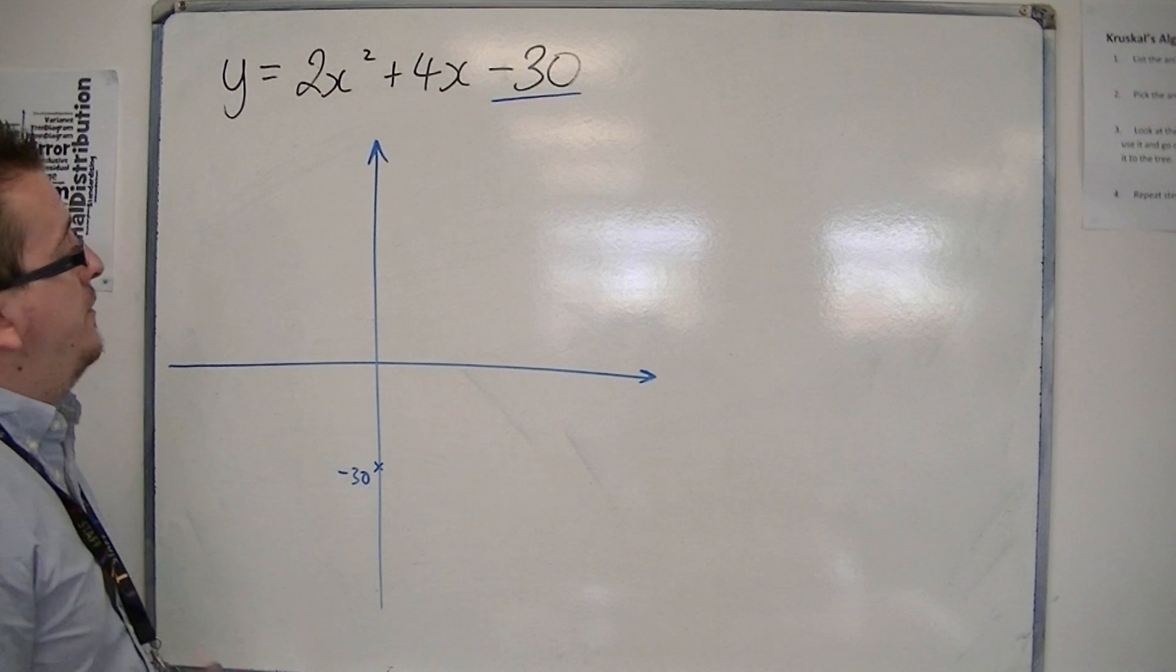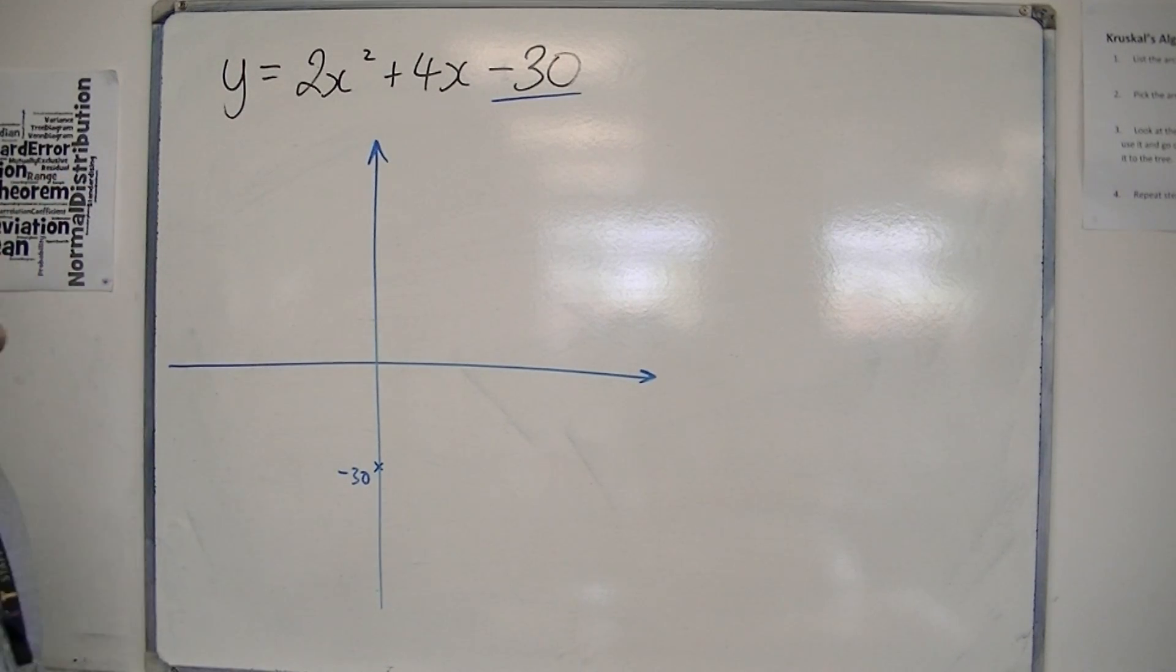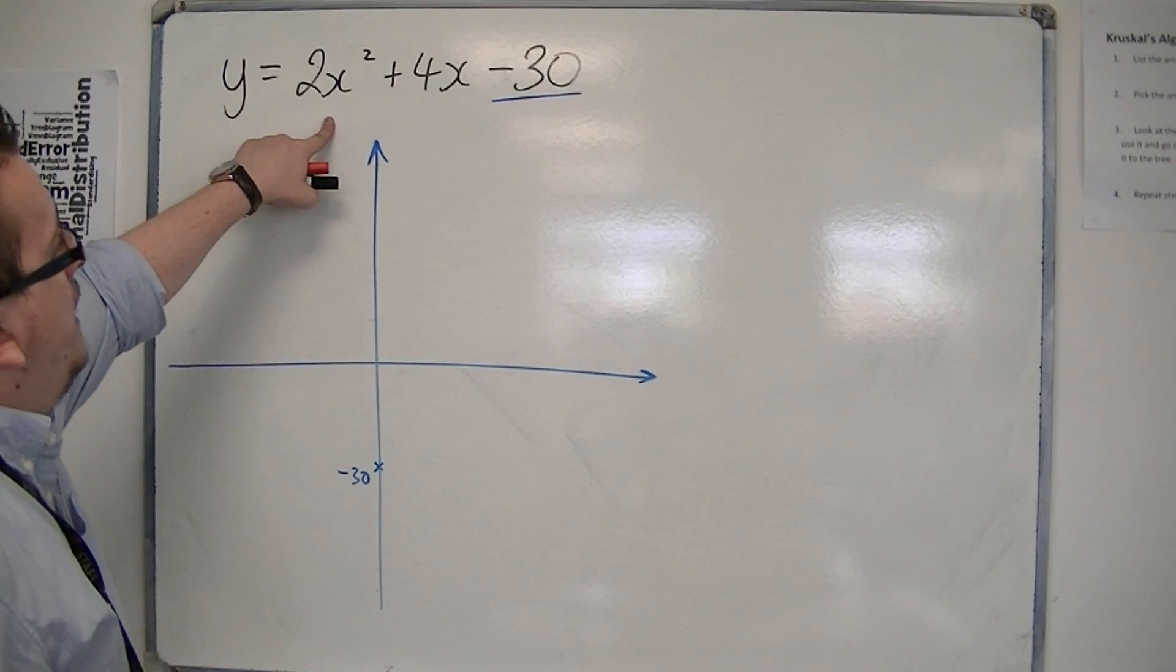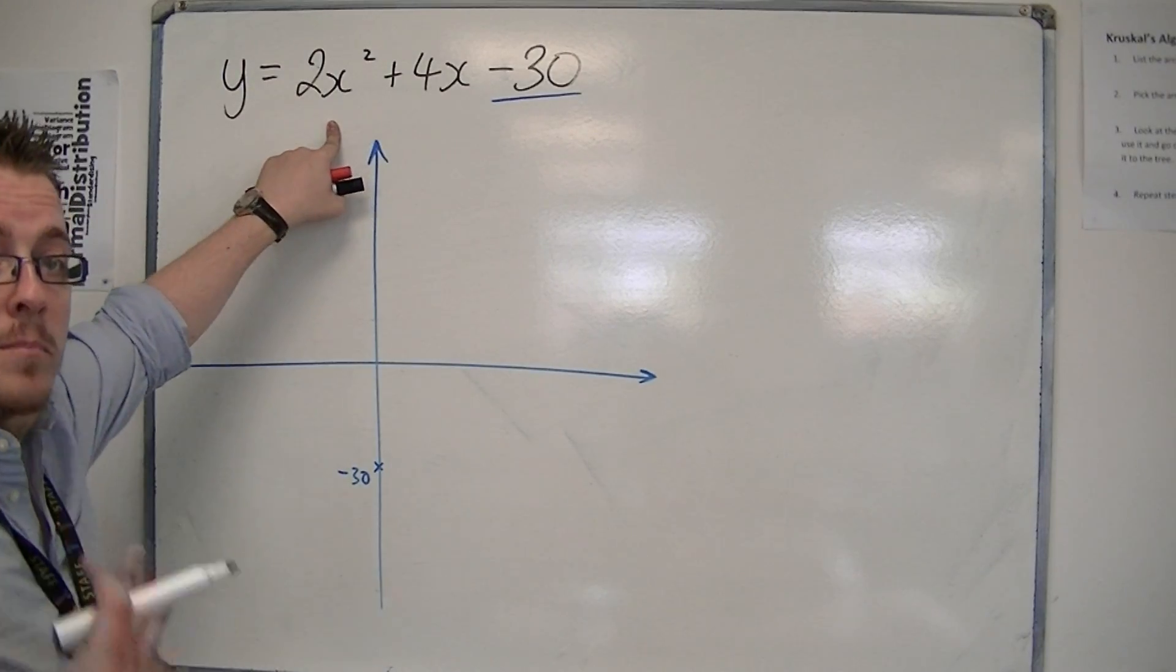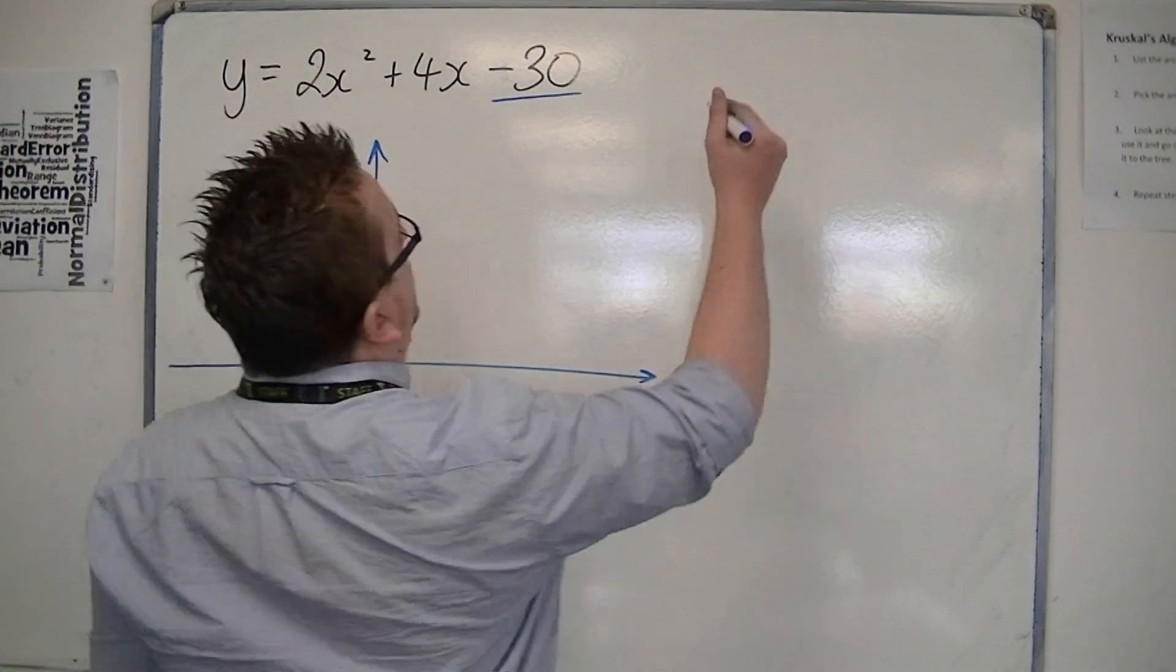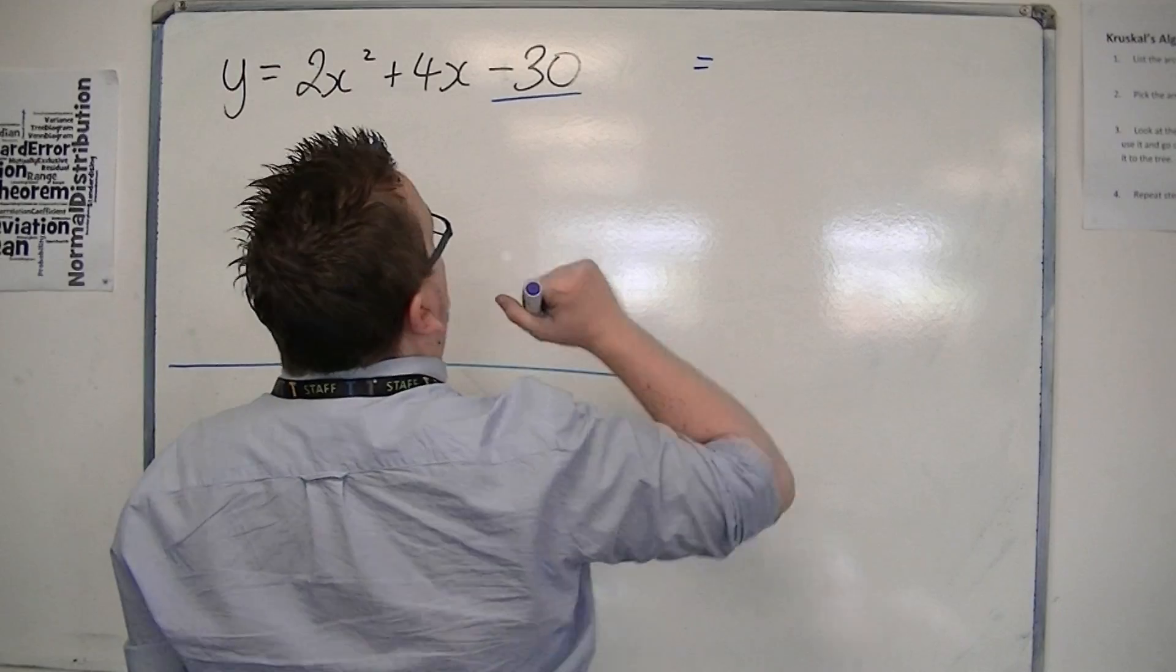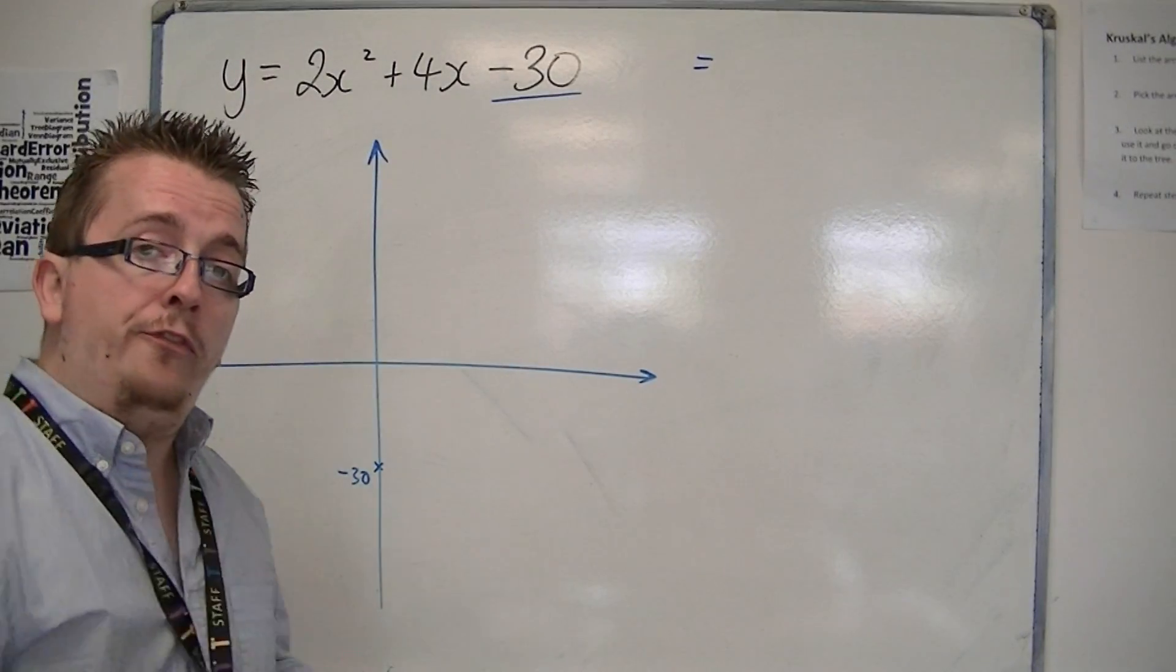We need to find the vertex, coordinates of the vertex. So in order to do that, we're going to need to complete the square on this. So, in completing the square, remember, factorise the first two terms.